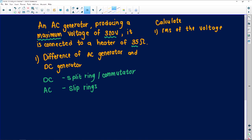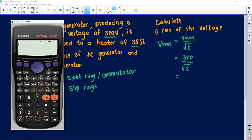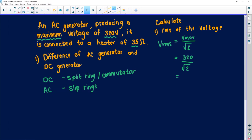This one is pretty easy. Remember, VRMS is equal to Vmax over the square root of 2. They've given us maximum voltage of 320, all over the square root of 2. At the top I have 320, at the bottom the square root of 2, and I get 226.27 volts. Remember to always round to two decimal places as your final answer.